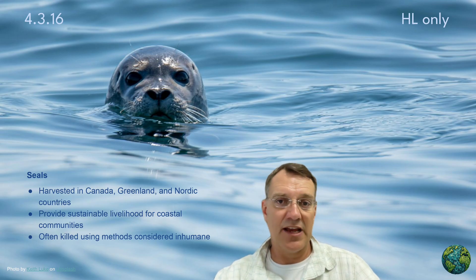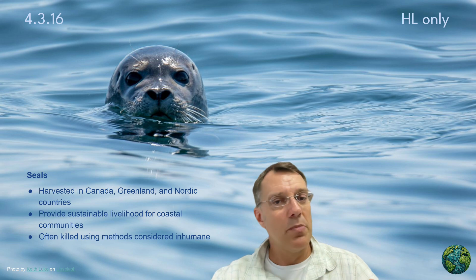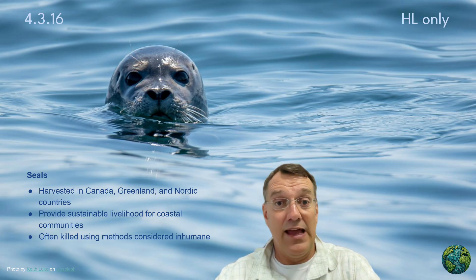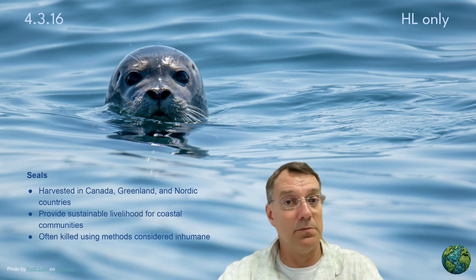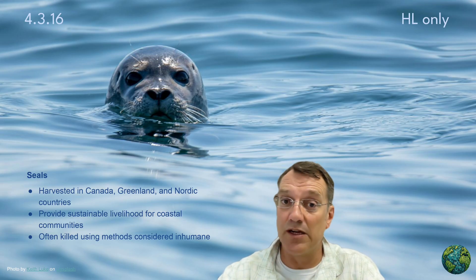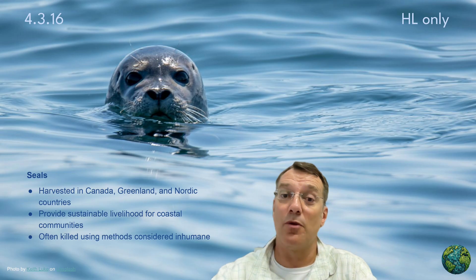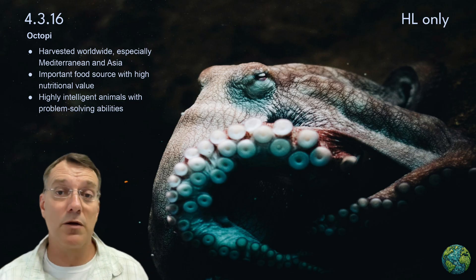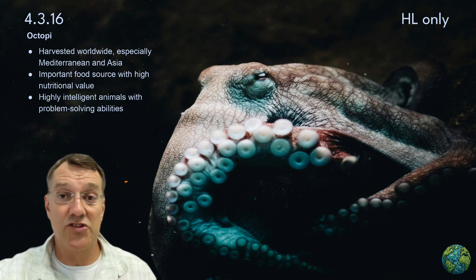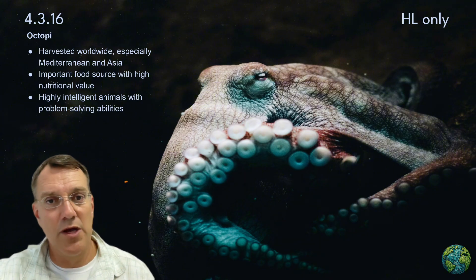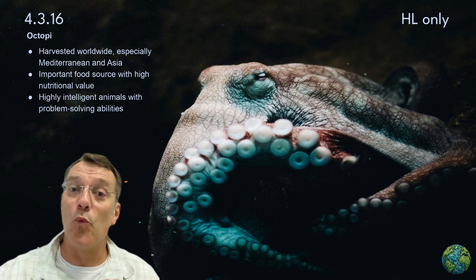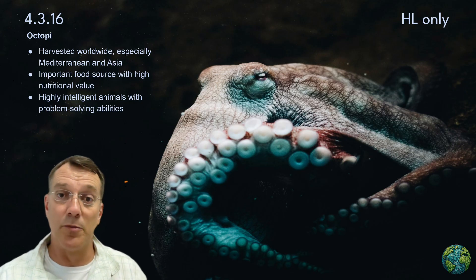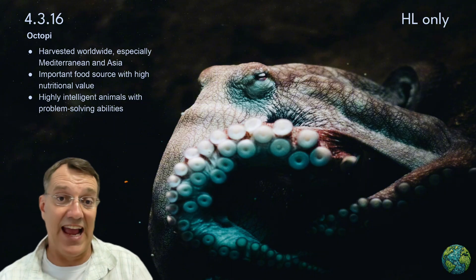Seal hunting in Canada, Greenland, and Nordic countries provides sustainable livelihoods for coastal communities, but it often involves methods that animal welfare advocates consider inhumane. This illustrates the tension between different ethical frameworks: economic considerations support communities that depend on seal hunting for income; environmental considerations might support sustainable harvesting of abundant seal populations; and animal welfare ethics focuses on preventing unnecessary suffering. Even harvesting invertebrates like octopi raises ethical questions, because scientific research reveals their remarkable intelligence and problem-solving abilities. Octopi are harvested around the world as an important food source with high nutritional value, but their cognitive abilities challenge traditional assumptions about which animals deserve moral consideration. This expanding understanding of animal intelligence forces us to reconsider our ethical frameworks for marine resource use. Should intelligence be a factor in determining how we treat different species?